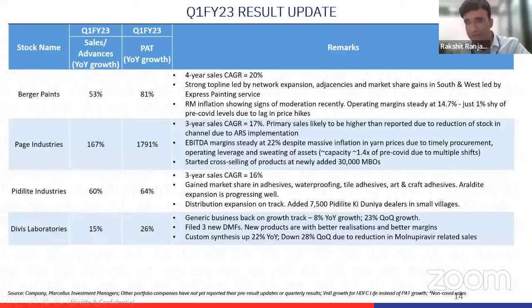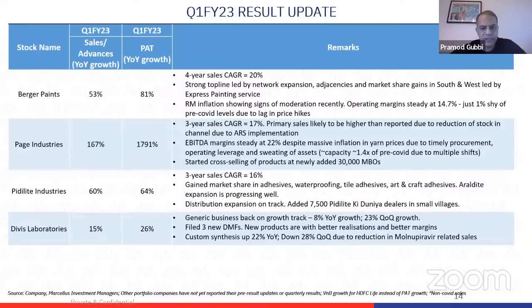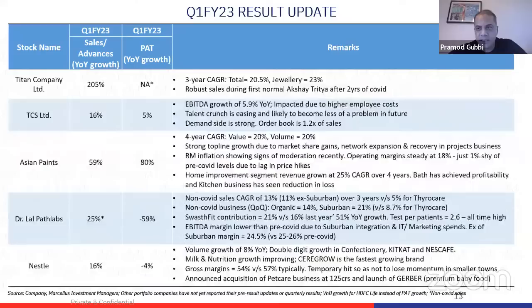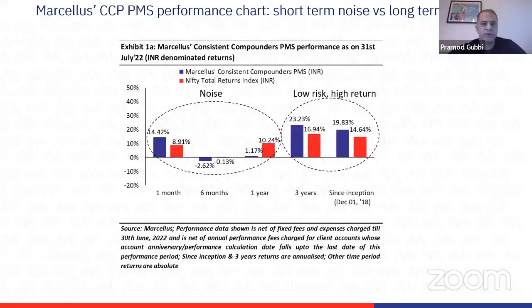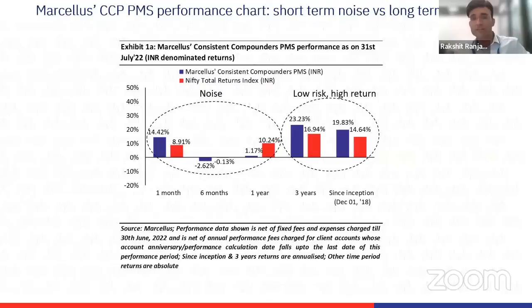We have a few questions. One investor asks: Asian Paints is now a $42 billion market cap business — how does Marcellus see this compounding consistently over the foreseeable future and acting in a timely manner when it hits the ceiling? The gentleman is asking how big can it really get without becoming too big for the economy it's operating in. A very valid question — and I'm glad you asked it for Asian Paints specifically, because that's actually the company in our portfolio where this question is most valid.